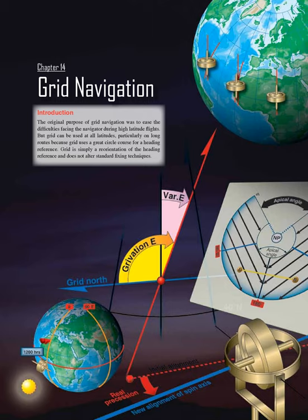Chapter 14: Grid Navigation Introduction. The original purpose of grid navigation was to ease the difficulties facing the navigator during high-latitude flights. But grid can be used at all latitudes, particularly on long routes, because grid uses a great circle course for a heading reference. Grid is simply a reorientation of the heading reference and does not alter standard fixing techniques.